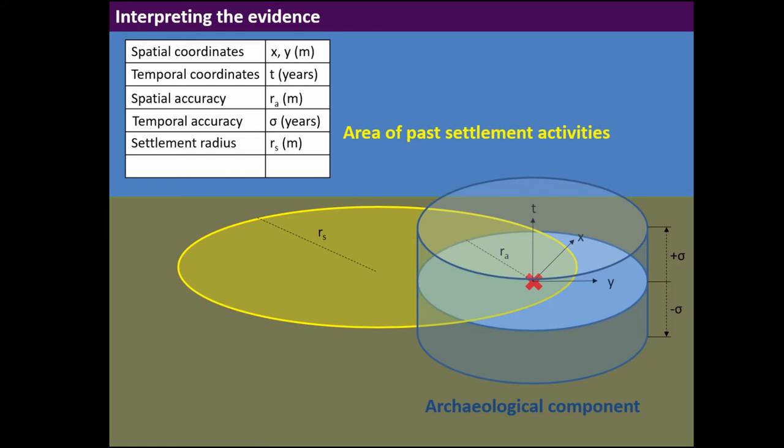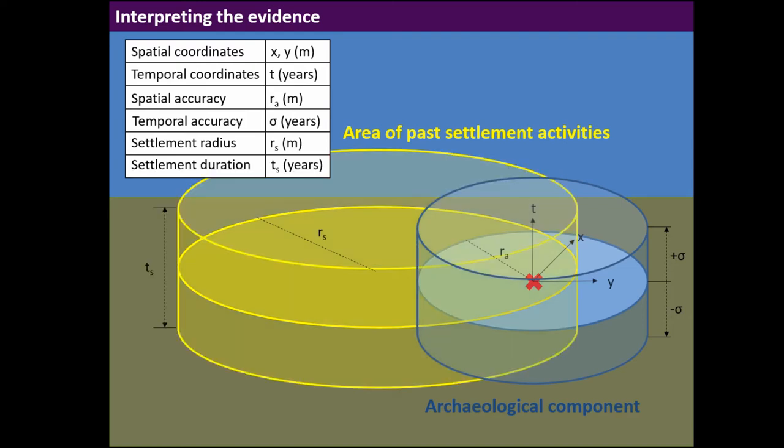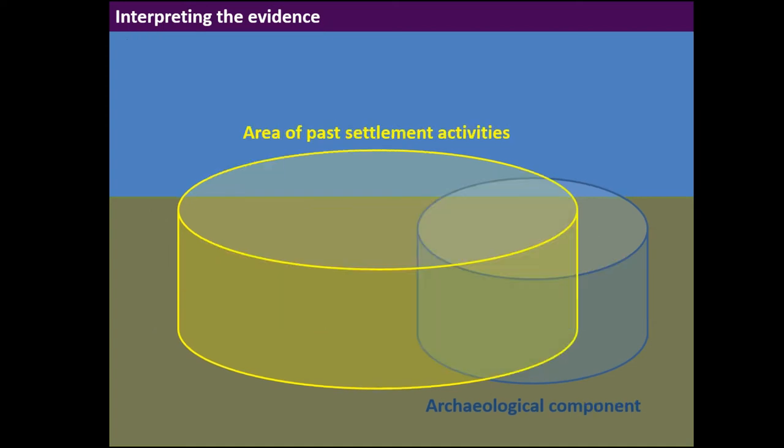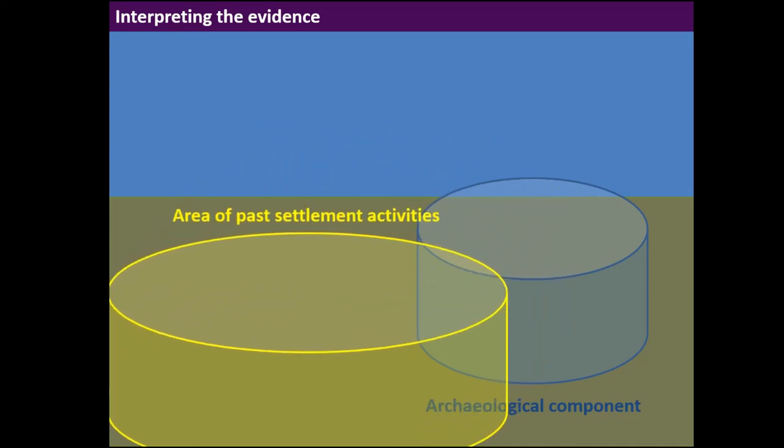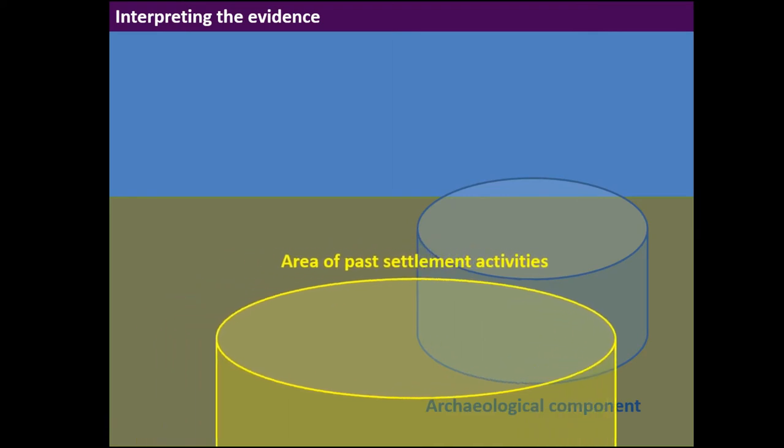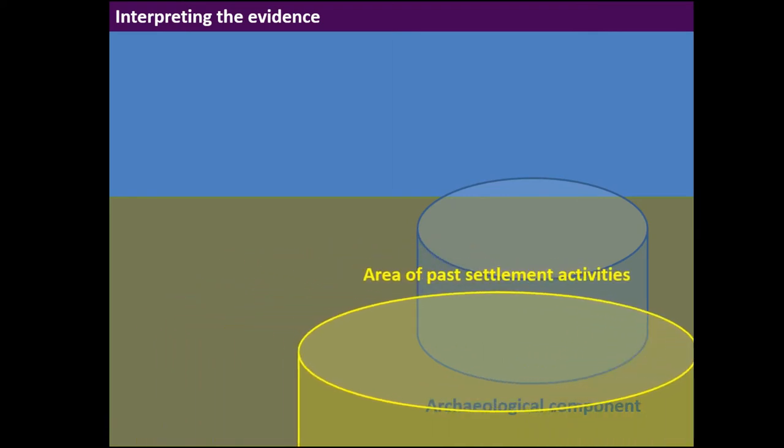We don't know in which part of that area the find was located, so we're interested in the settlement area itself. This settlement had some radius. I'm just going to use the word settlement, not area of settlement activities, it's easier. It has some radius, an area in space, but also the settlement had some duration. We don't assume the settlement lasted for one year. Evidence can come from any time, any place in that settlement.